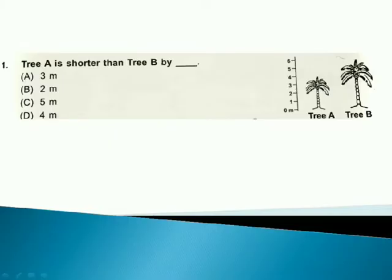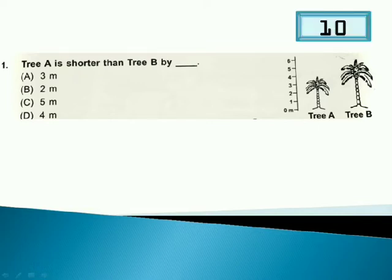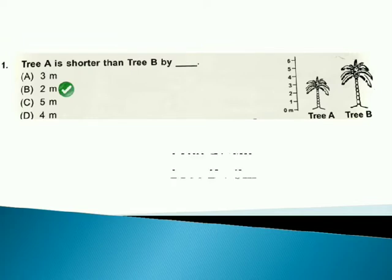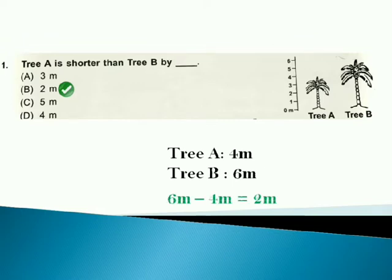Tree A is shorter than tree B by... Time starts now. Answer is option B because tree A is 4 meters and tree B is 6 meters. Difference is 2 meters.